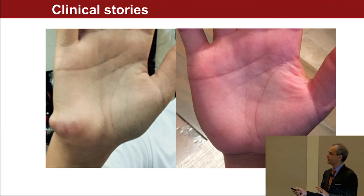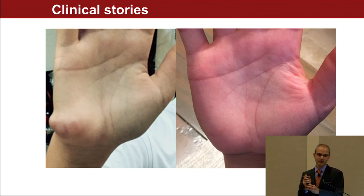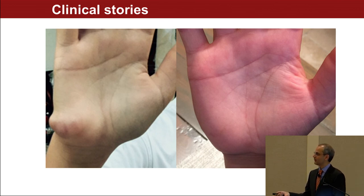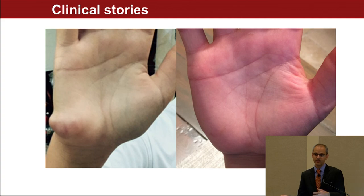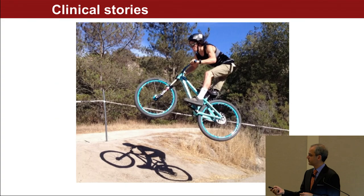I wanted to conclude with a few clinical stories. This is a 15-year-old young man with a desmoid tumor in the palm of his hand, wrapping around the ulnar tendons, muscles, and ulnar nerve. His family had gone to every major cancer center in the country and was being offered a year of chemotherapy. We treated it with focused ultrasound — it's gone. He avoided all the chemotherapy and all the negative consequences that could have come from it.